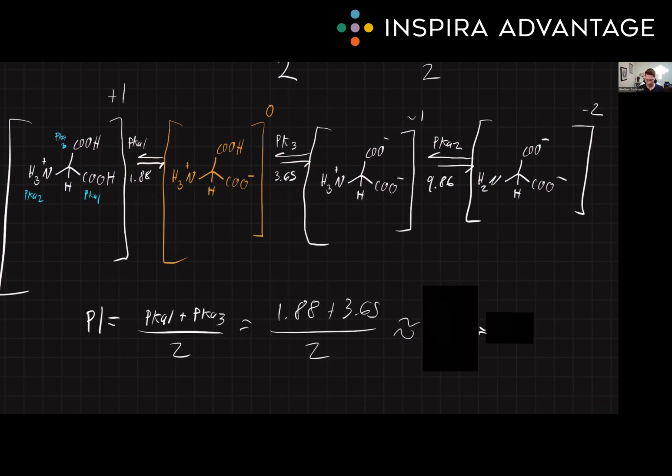Now let's do some rounding. I'll say that's 1.88 plus 3.65, that's probably around 5, divide that by 2. So this is just 2.5 as our pI for this acidic amino acid.